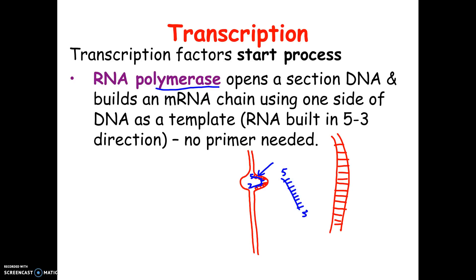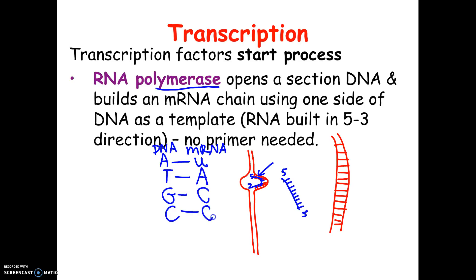Notice that the mRNA is single-stranded, and there's an order to the connections. If the DNA has an A, the mRNA is going to make a U, because RNA does not have the base thymine. If there's a T in the DNA, the mRNA is going to have an A. A G in the DNA would match to a C, and a C would attach to a G. So the mRNA is a complement to the DNA code.